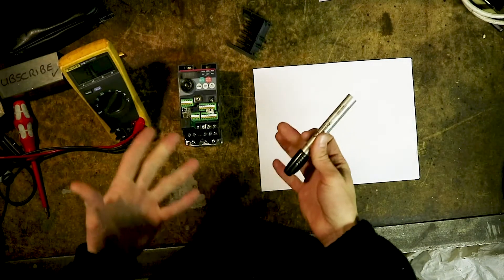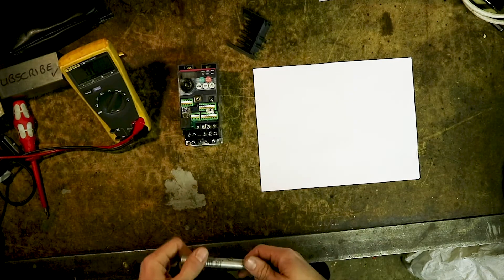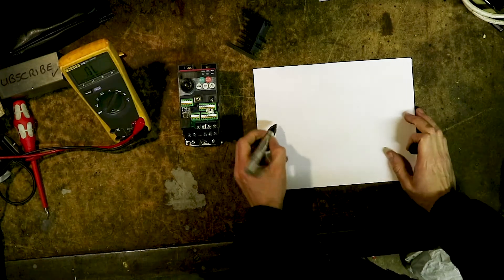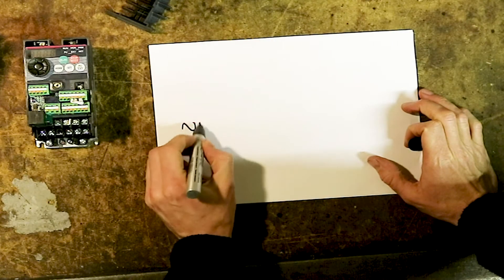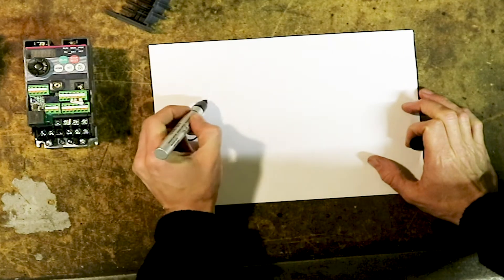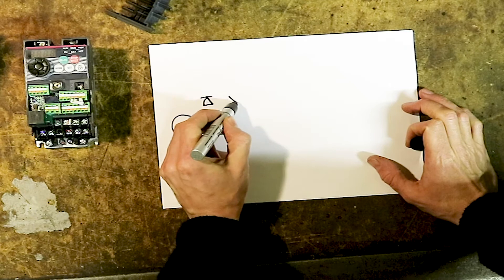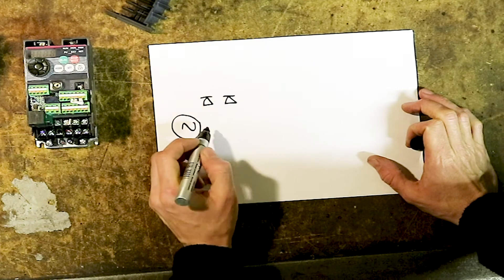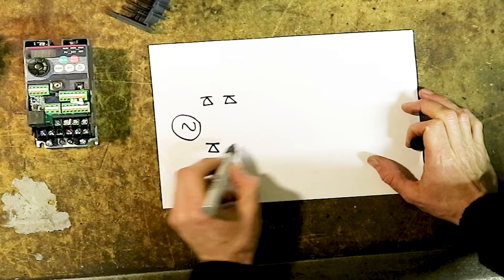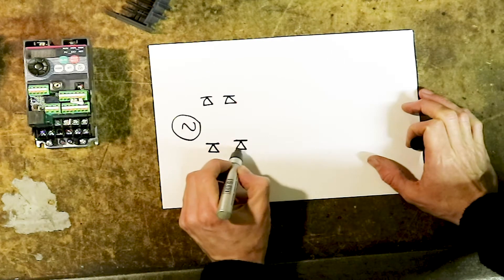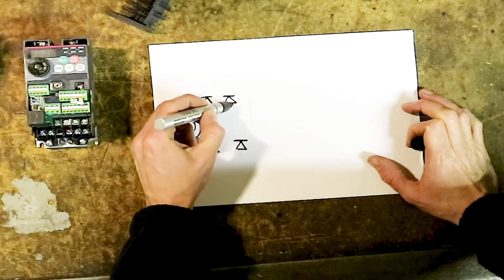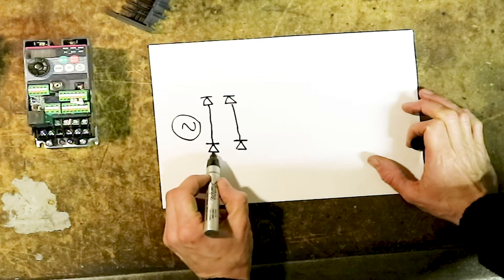I'm not going to go too much into electronic theory because I'll quickly get out of my depth, but basically in an inverter you've got your AC power source coming in, your bridge rectifier. On a single phase one like we have here you'll have four diodes, and on a three phase one you'll have six.